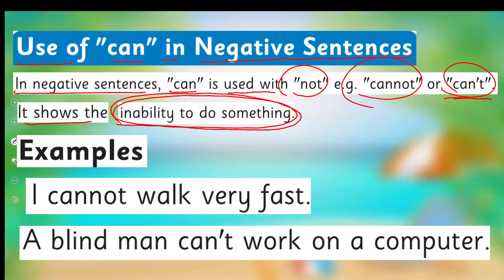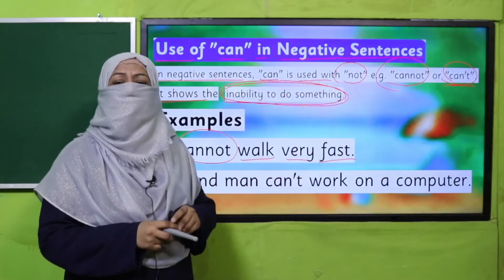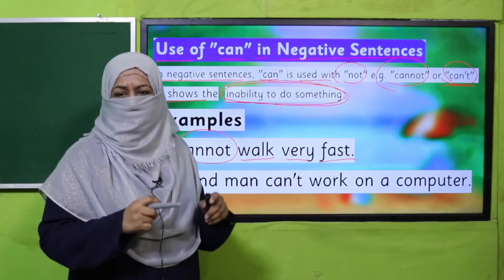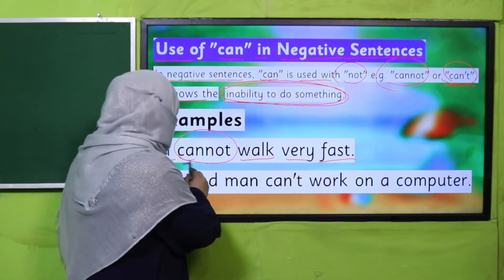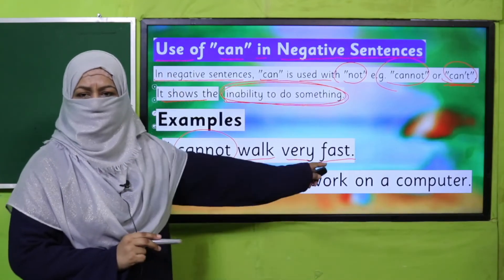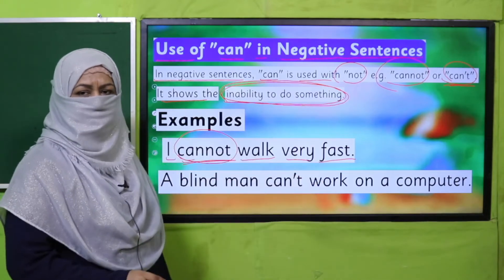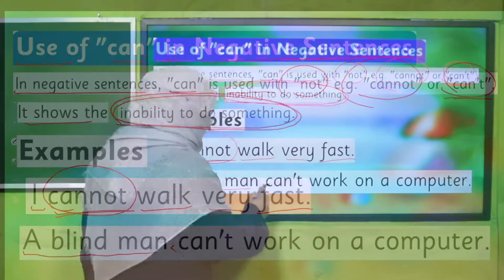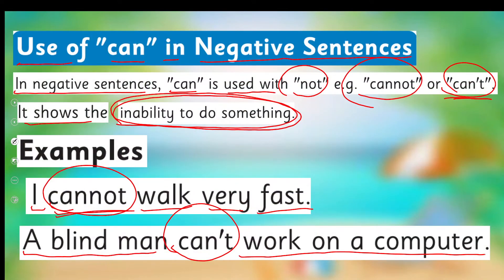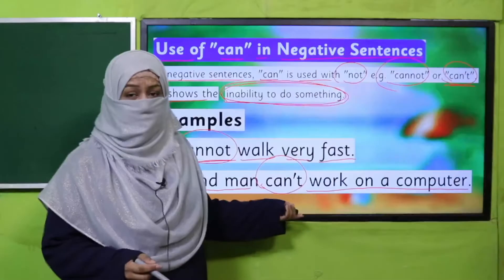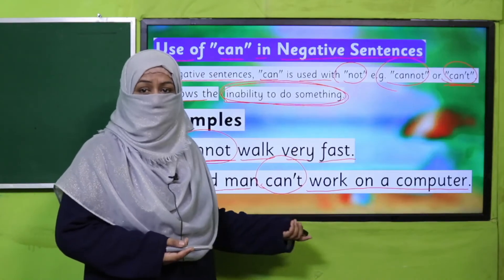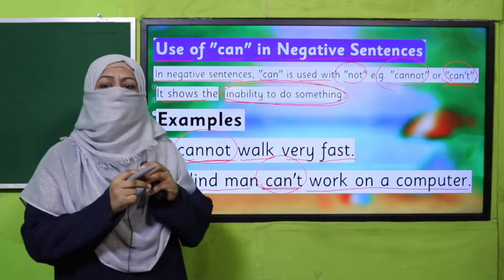If you want to say you are not able to do something, use 'cannot.' For example: 'I cannot walk very fast because my shoes are not proper.' A blind man can't work on a computer — this is a sentence showing inability. But if he learns, he can work as well. So 'cannot' is used to show the inability in the current state.